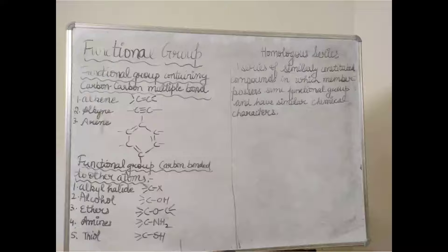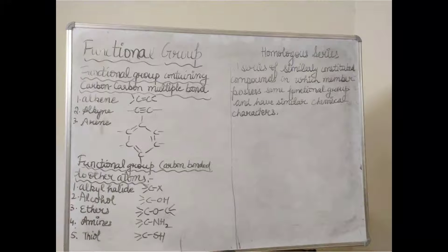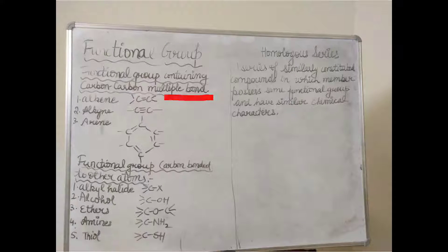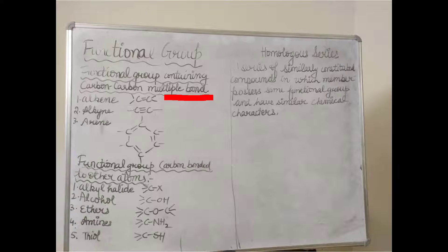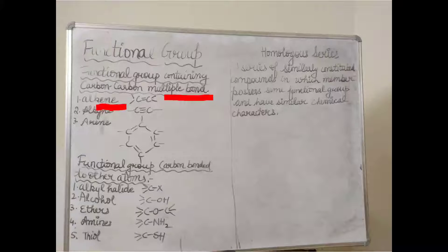Good evening once again. I am going to discuss with you the functional group. The functional group containing carbon-carbon multiple bond — if it contains a double bond, then it will be termed as alkene.